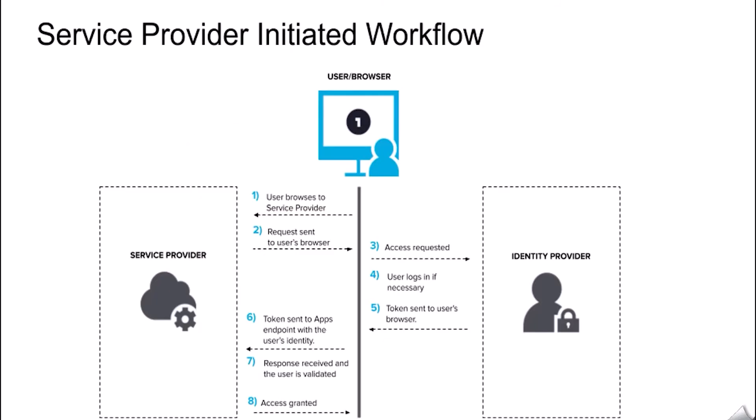Let's understand the same through a diagram. In this diagram we can see there is the service provider, the identity provider, and the user's browser. First, the user's browser connects to the service provider. A request is sent back to the user's browser. In the third step, an access request is sent to the identity provider. The user logs in if necessary. A token is sent to the user's browser, then the token is sent to the app's endpoint with the user identity. A response is received, the user is validated, and access is granted.